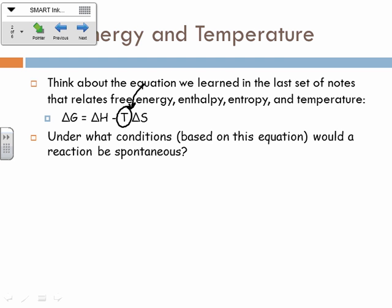Notice this temperature is linked to the ΔS, the entropy. So if we have a positive entropy change for this reaction, then raising the temperature is actually going to eventually make ΔG negative no matter what. Now, if we have a negative entropy change, then that's a different story — the temperature change is going to have the reverse effect, and we want to lower it. So the question is, under what conditions would a reaction be spontaneous? For a reaction to be spontaneous, ΔG needs to be negative.